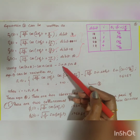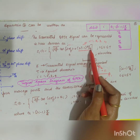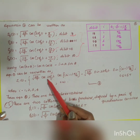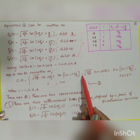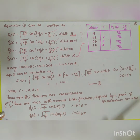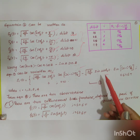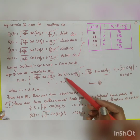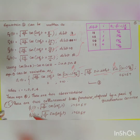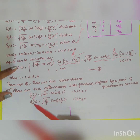Equation 1 can be rewritten as: s_i(t) = sqrt(2E/T) · cos(2πf_c·t) · cos((2i−1)π/4) − sqrt(2E/T) · sin(2πf_c·t) · sin((2i−1)π/4), valid for 0 to T, and 0 otherwise. By rewriting it this way and applying Gram-Schmidt orthogonalization, we can identify the number of orthonormal basis functions — one from the cosine term and one from the sine term — giving two orthonormal basis functions.